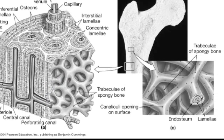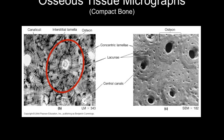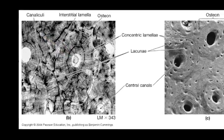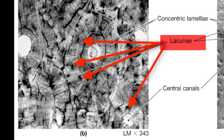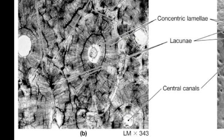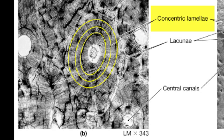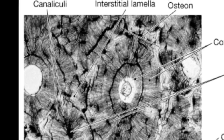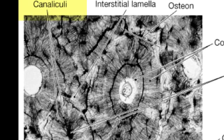Here you can see how spongy bone is organized. Instead of calling these units osteons, we call them trabeculae. Here's a cross section of an osteon and its labeled parts at approximately 100x magnification. The central canal, also known as the Haversian canal, houses the blood vessels, and the lacunae house the osteocytes. The matrix of the osteon grows in concentric rings called lamellae, and within the matrix are tiny channels called canaliculi that carry nutrients from the bloodstream to the cells and allow the cells to communicate.